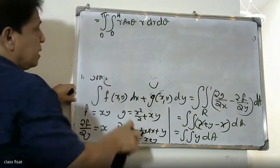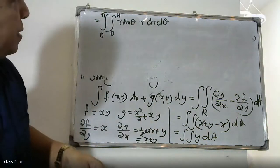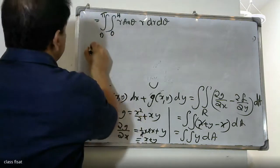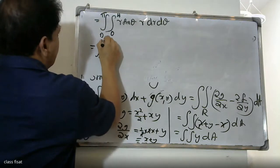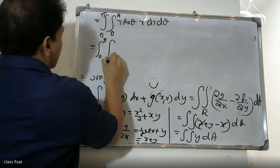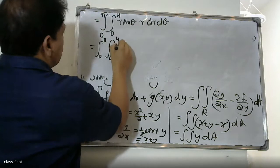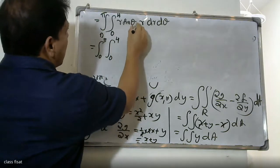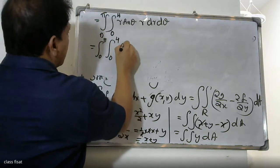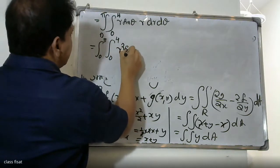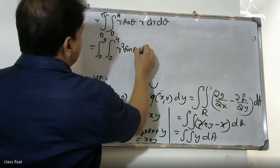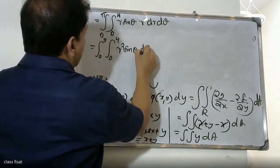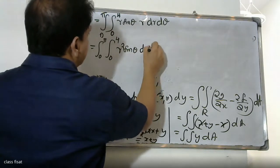The double integral of y dA in polar coordinates becomes the integral from 0 to π, integral from 0 to 4, of r² sin θ · dr dθ, since y = r sin θ and dA = r dr dθ.